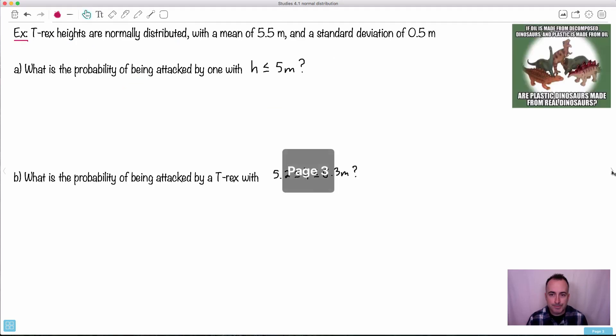So let's do an example. I took an example of dinosaurs because I like dinosaurs. So Tyrannosaurus rex heights are normally distributed with a mean of 5.5 meters and a standard deviation of 0.5. I like this little joke here. If oil is made from decomposed dinosaurs, not all of it, a very small portion, but let's just say, and plastic is made from oil, are plastic dinosaurs made from real dinosaurs?